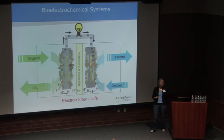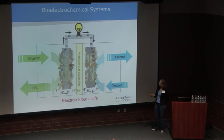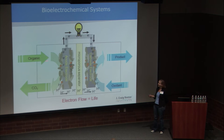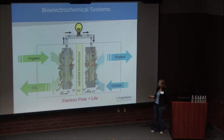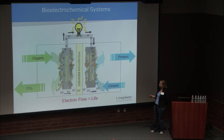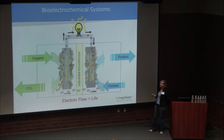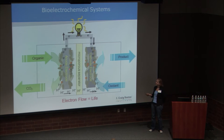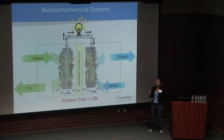So the bioelectrochemical systems — this is a generic cartoon about how it works. An organic comes in, though we could also utilize hydrogen, but typically we're looking at complex organics. Then organisms forming biofilms on our electrode surfaces begin oxidizing the organics and utilizing the anode electrode specifically as a source for respiration. This is an anaerobic environment; we're not introducing oxygen to the anode, so the best electron acceptor there will be this solid surface.